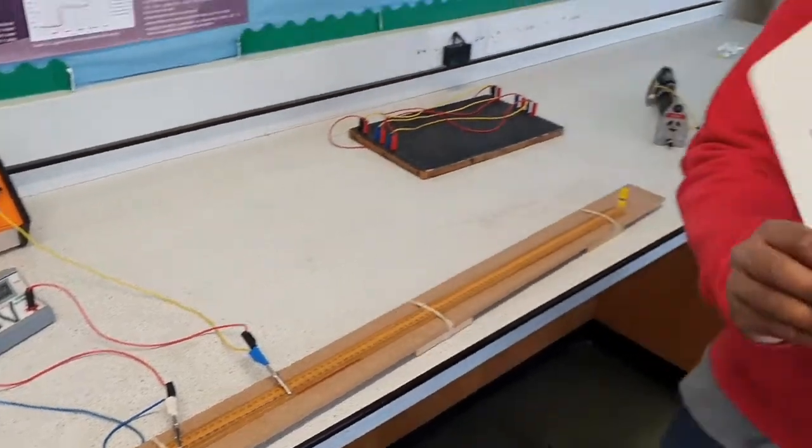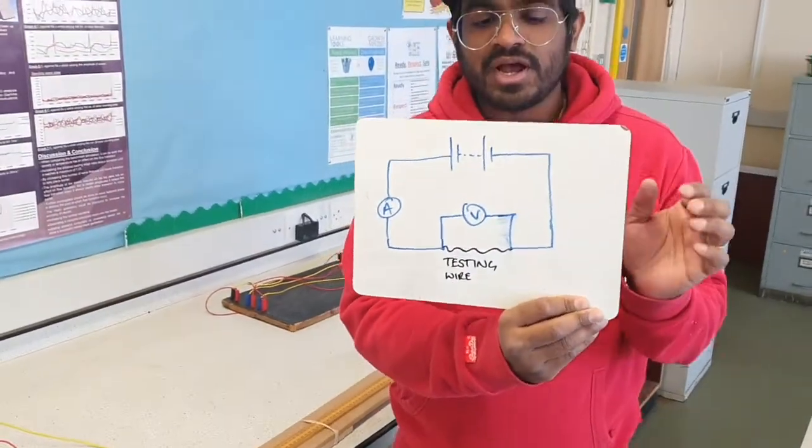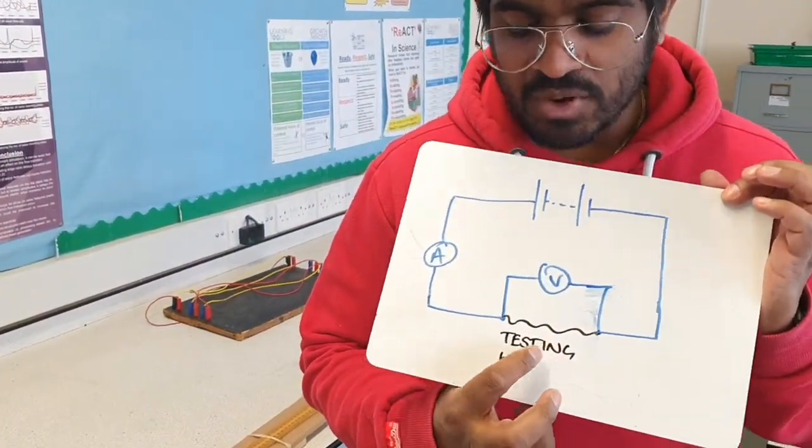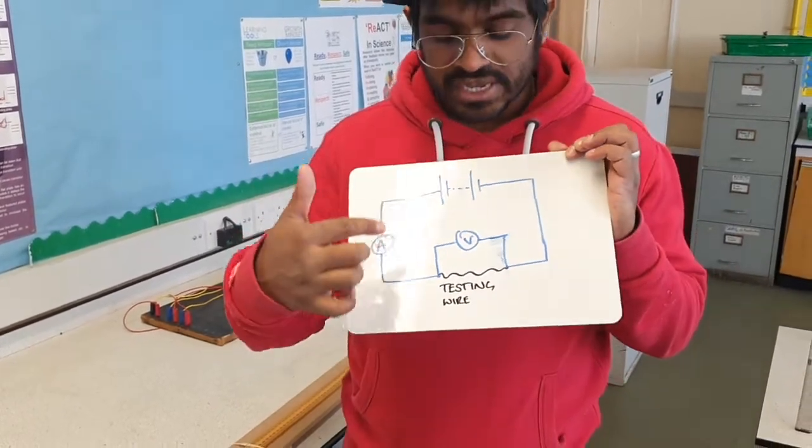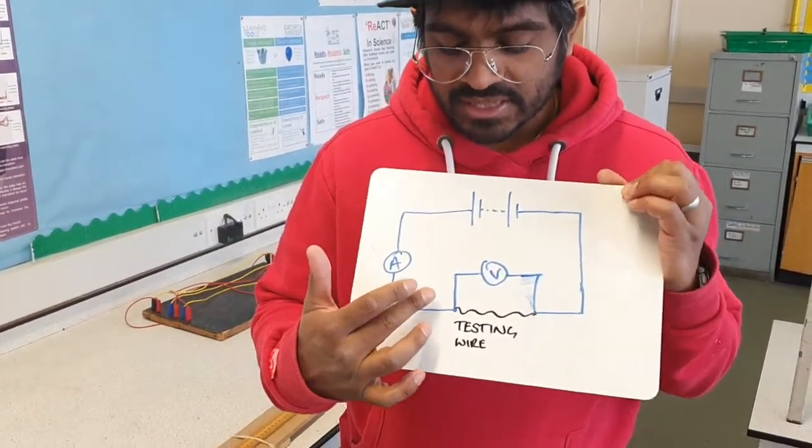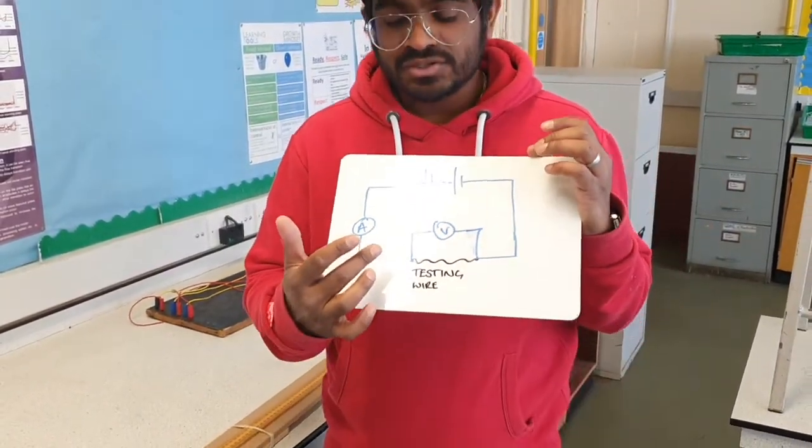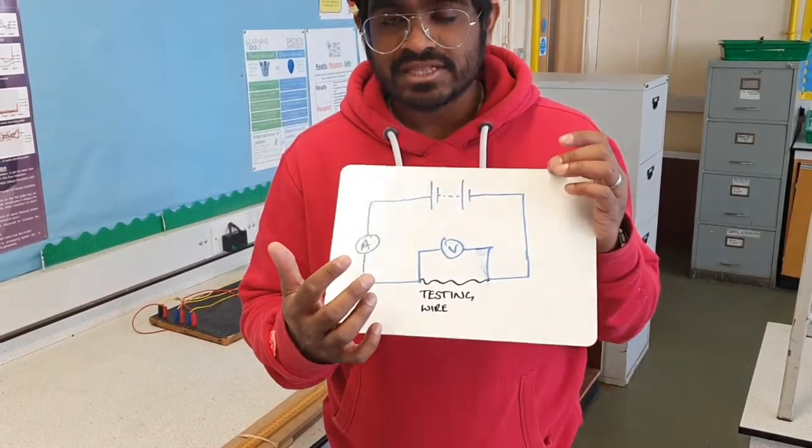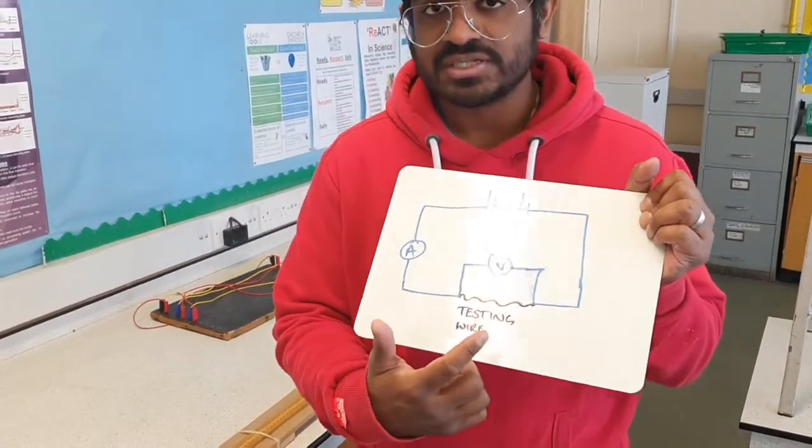Here is an example circuit diagram where I've shown the black wire is my testing wire. Just to verify that the voltmeter is connected in parallel to the testing wire to show that you get the potential difference across the testing wire.